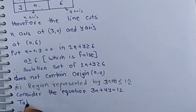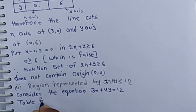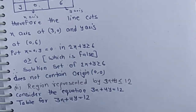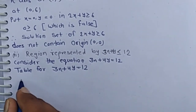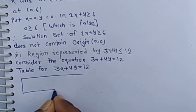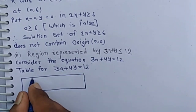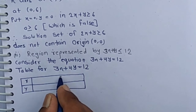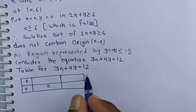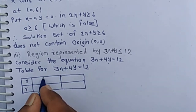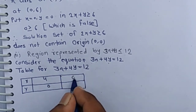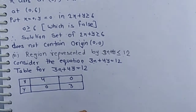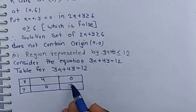Now we make a table for 3x plus 4y equals 12. At the x-axis, y equals 0 — putting y equals 0, we get x equals 4. At the y-axis, x equals 0 — putting x equals 0, we get y equals 3. So this line cuts the x-axis at 4 comma 0 and the y-axis at 0 comma 3.